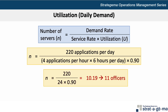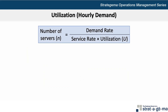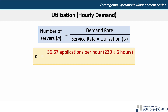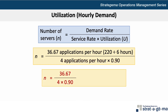If we base our solution on the hourly rate, we use the same formula, but now in the numerator we determine the hourly demand rate to be 36.67 applications per hour, calculated as 220 applications per day divided by a 6-hour workday. We then divide by 4 applications per hour — the hourly service rate — and multiply by the 90% utilization. N equals 36.67 divided by 4 times 0.9, which equals 10.19, or 11 loan officers.